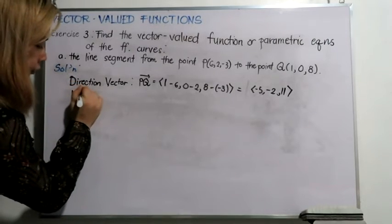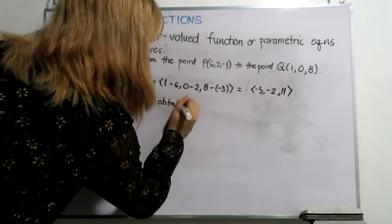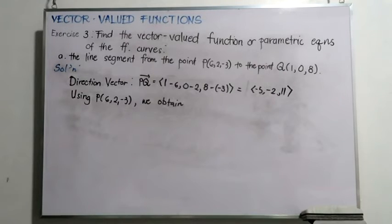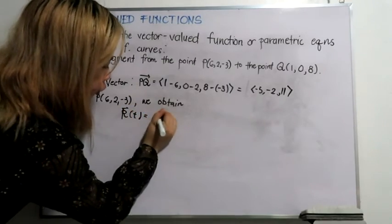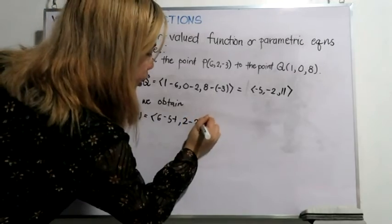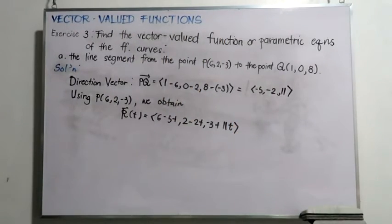Now, using the initial point P, we can obtain the vector-valued function of the line containing P with direction vector PQ by adding the components of PQ times the parameter T to the coordinates of P. Thus, we can define R of T to be (6 minus 5T, 2 minus 2T, negative 3 plus 11T). However, this represents the line containing P whose direction vector is PQ, but we only need the line segment from point P to point Q. Thus, we need to restrict our parameter T to certain values.